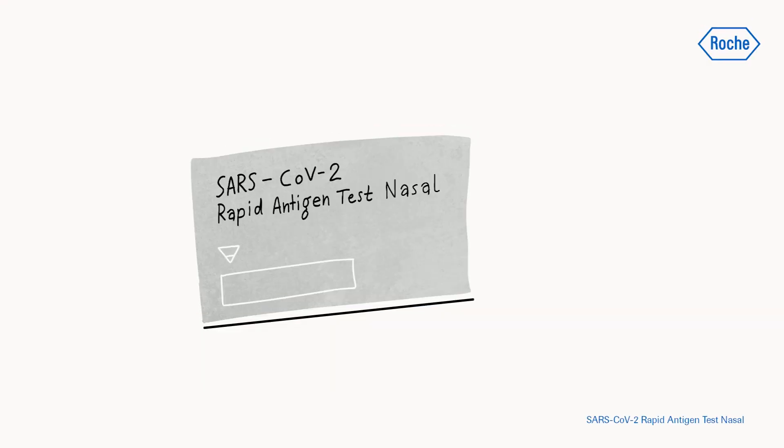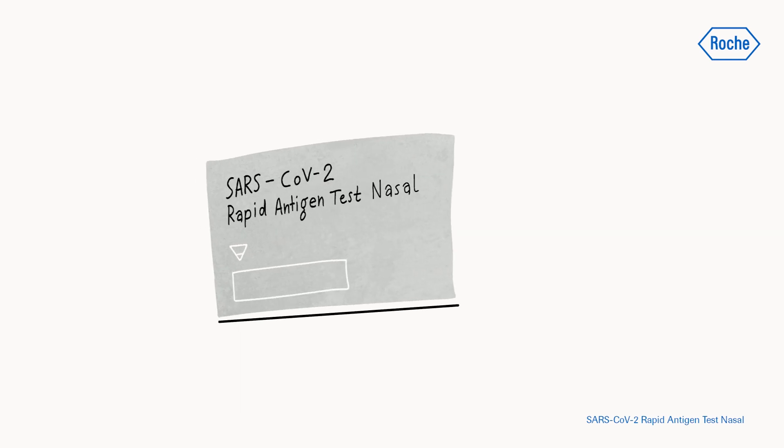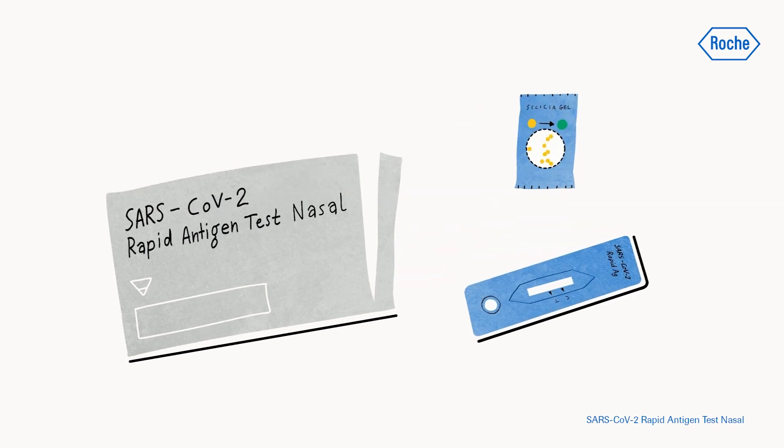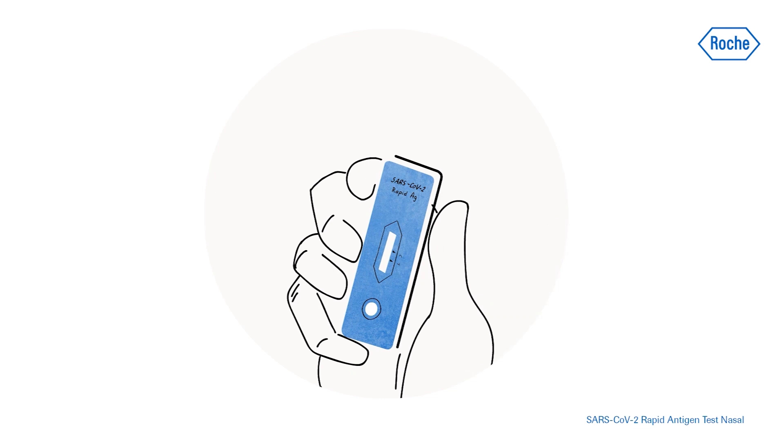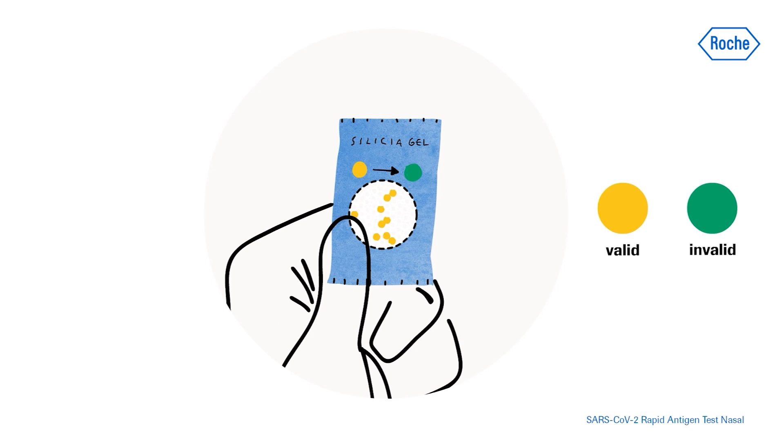For each test, check the expiry date on the back of the foil pouch. Do not use the test if the expiry date has passed. Open the foil pouch and remove the test device and the desiccant package. Ensure that the test device is undamaged and that the desiccant status indicator is yellow.